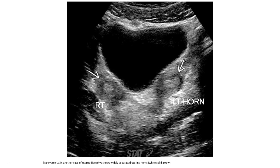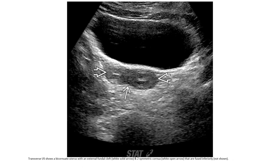Ultrasound in another case shows uterus didelphys with widely separated uterine horns. Transabdominal ultrasound shows a bicornuate uterus with an external fundal cleft and two symmetric cornua.